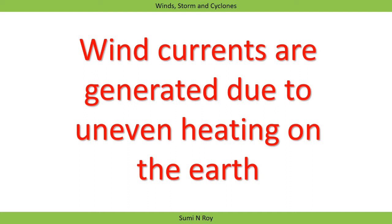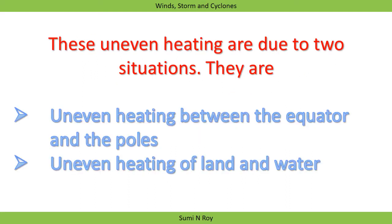The greater the difference in air pressure between two regions, the faster the wind blows. Wind currents are generated due to the uneven heating on the earth. This uneven heating is due to two situations: uneven heating between the equator and the poles, and uneven heating on land and water.